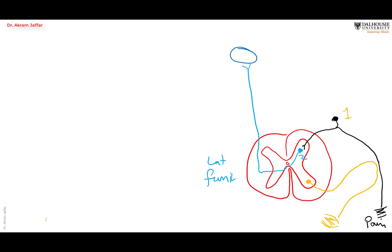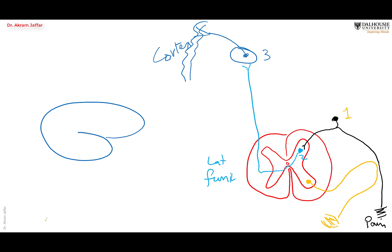This axon goes up and reaches the thalamus. Remember, the thalamus is the hub of all sensory impulses in the body. In the thalamus we have the third order neuron, and the third order neuron projects to the cerebral cortex. Which part of the cortex receives pain sensation — whether from the skin of the toe or the finger — where is that cortex located?